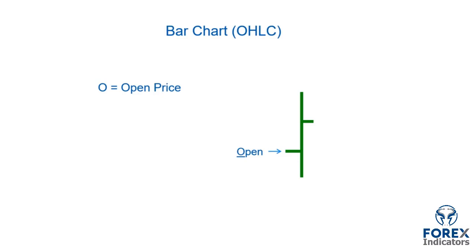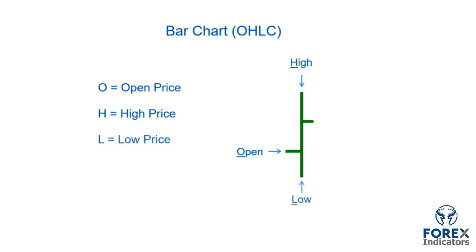The H represents the high for the period. To borrow from the one hour example, this will be the highest point that price reached in that one hour period. The L represents the low for the bar's period, so in the same example, this would be the lowest price point reached in the one hour period.